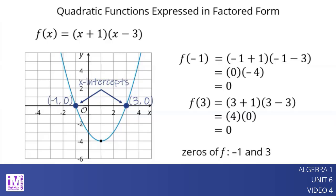So, the zeros of a function have the same values as the x-coordinates of the x-intercepts of the graph of the function.